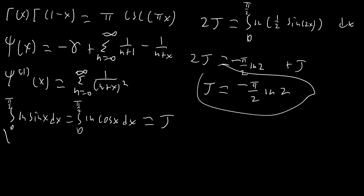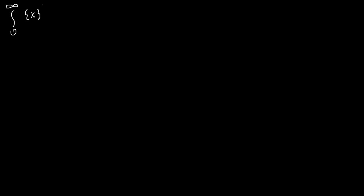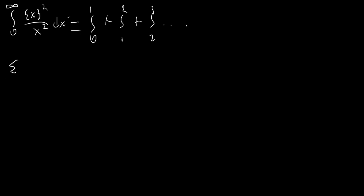Now we can get started on the main integration. We've done a lot of fractional part integrals in recent videos — I love the way they slip around and turn into other integrals and infinite sums. We're going to start by splitting the integral into an infinite number of pieces: the integral from 0 to 1, plus 1 to 2, plus 2 to 3, and so on, giving us the infinite sum from n = 0 to infinity of ∫ from n to n+1 of {x}²/x² dx.